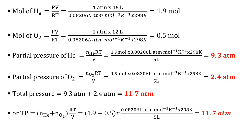After getting the moles of helium and oxygen, we determine the partial pressures using P = nRT/V. For the partial pressure of helium and oxygen in the new container, we use the 5-liter volume of the tank at 25 degrees Celsius. Substituting values gives 9.3 atmospheres for the partial pressure of helium. For oxygen, we also use n(O2) × R × T divided by the 5-liter tank volume.